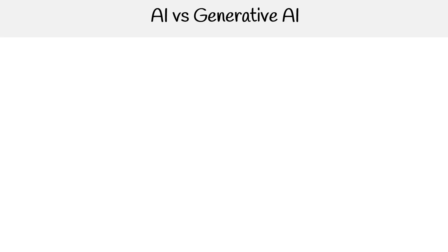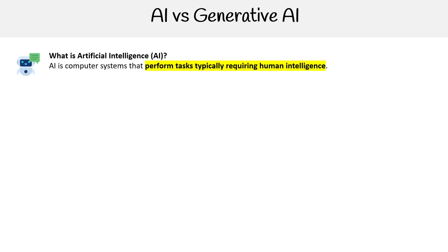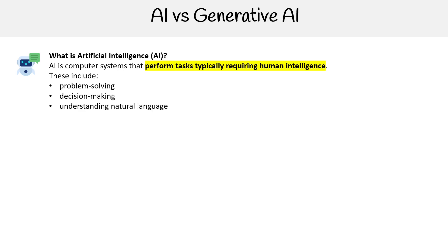Let's compare AI versus generative AI, starting with AI. So what is AI? It is computer systems that perform tasks typically requiring human intelligence. This includes problem solving, decision making, understanding natural language, and recognizing speech and images.